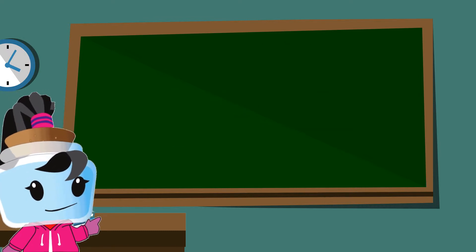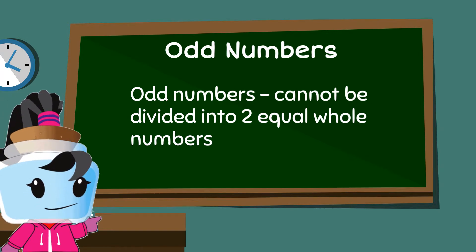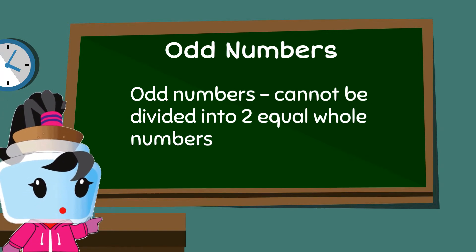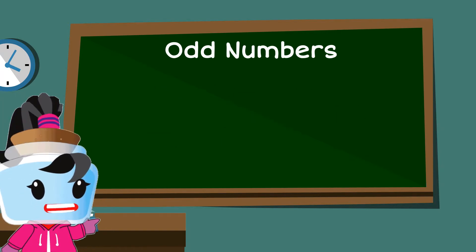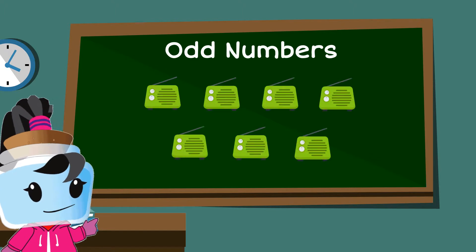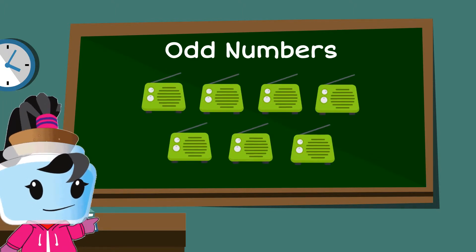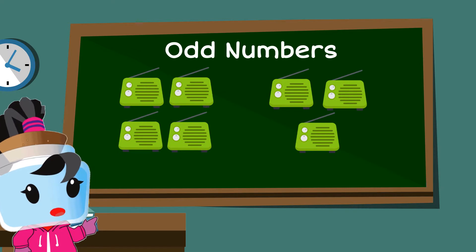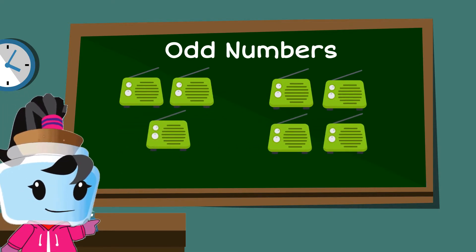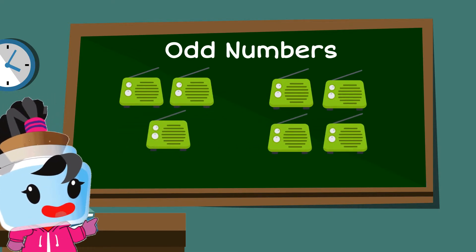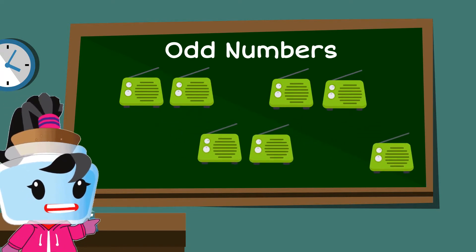On the other hand, a number is odd when you cannot divide it into two equal whole numbers. Look at these seven radios. No matter how we try, we can't really divide them into two equal parts. And if we try pairing them up, one is always left behind.